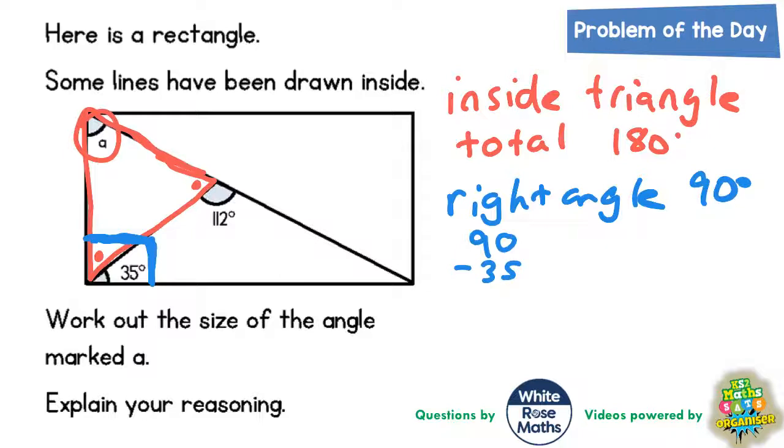So 0 take away 5 we can't do, so borrow from the 9. The 9 becomes an 8 and the one we've borrowed makes the 0 into 10. 10 take away 5 is 5 and 8 take away 3 is also 5. So this first red dot here must be 55 degrees. So let's write that in as 55 degrees.